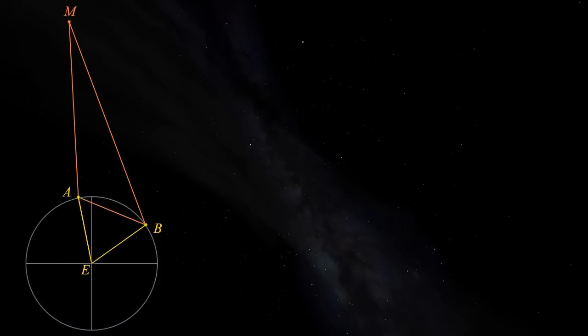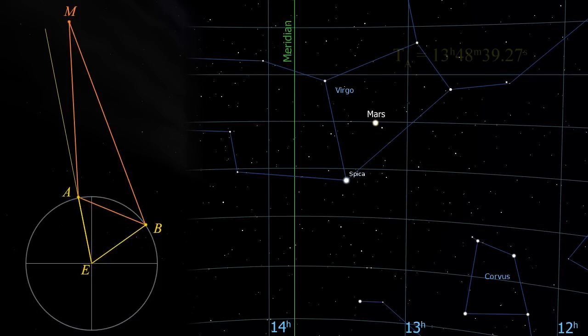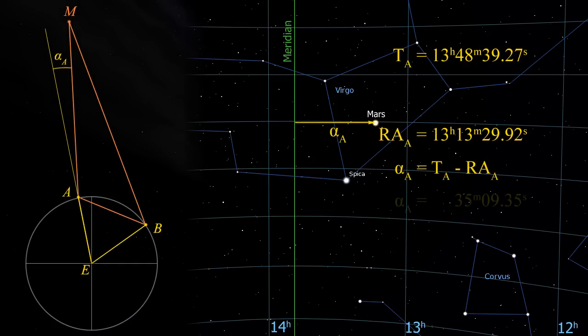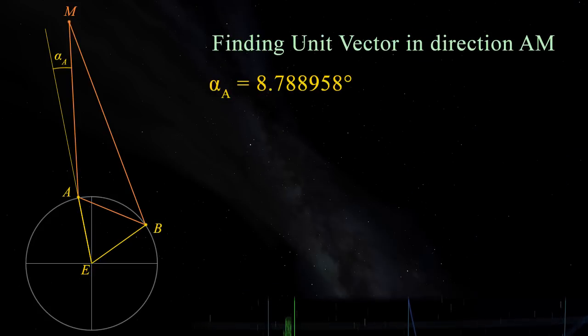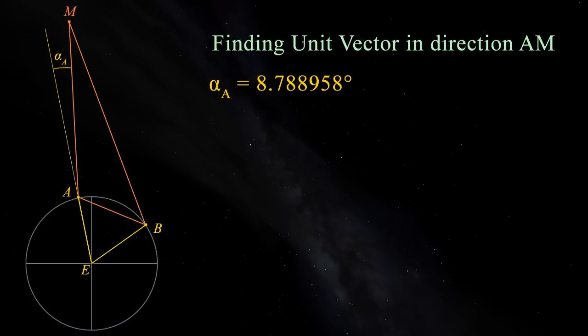Okay, now we need to head working out a vector from Alice towards Mars. First, we need to know the angle at which Alice observed Mars. The extended line EA corresponds to Alice's meridian. The local sidereal time of her observation was 13 hours 48 minutes and 39.27 seconds. This is the right ascension of objects along her meridian. Alice observed Mars at 13 hours 13 minutes and 29.92 seconds. The difference between the two is the angle alpha A. This is 35 minutes and 9.35 seconds. Converting this to degrees, we get alpha A equal to 8.788958 degrees. Now we need the angle of the line AM relative to our coordinate system's y-axis. This is simply Alice's longitude of minus 10 degrees plus the angle she observed Mars to be at, alpha A.